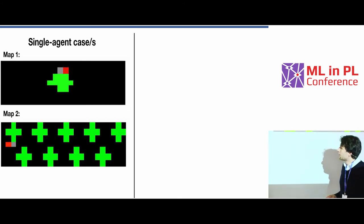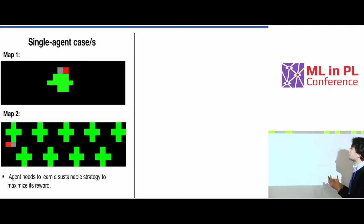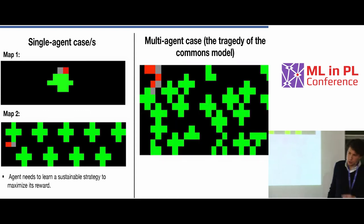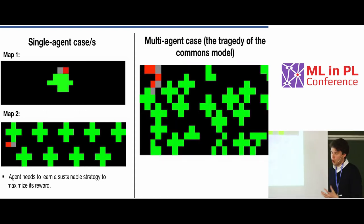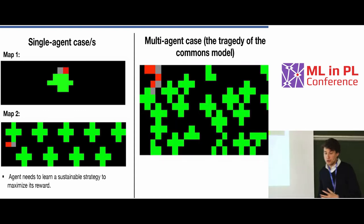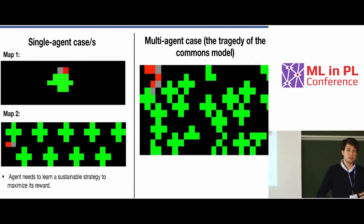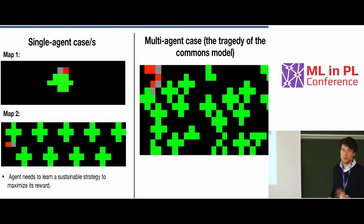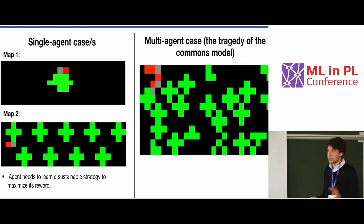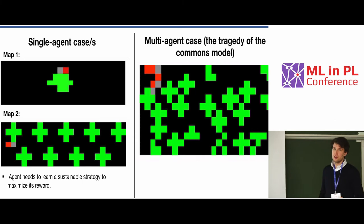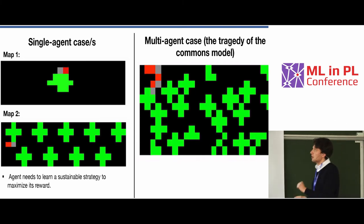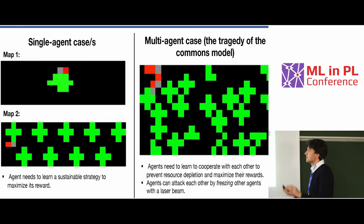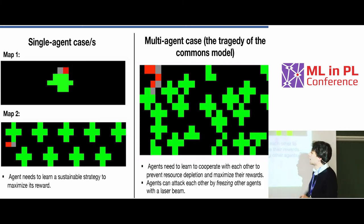But the cool thing was the multi-agent case, where the agents had to actually learn to cooperate, learn to prevent resource depletion, and the trick here was that they could also fight — meaning they could actually freeze each other with a laser beam, which is just this white thing you can see.